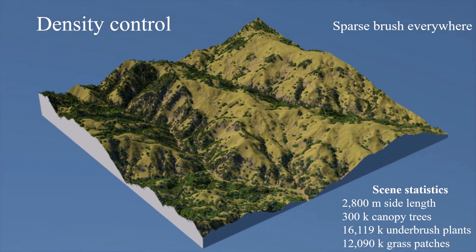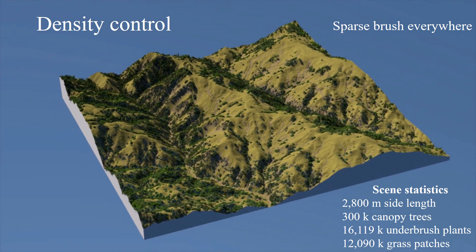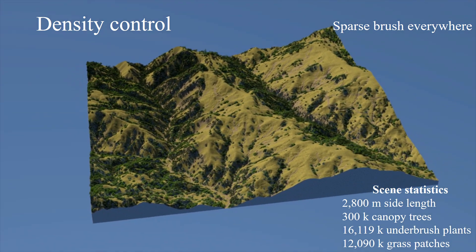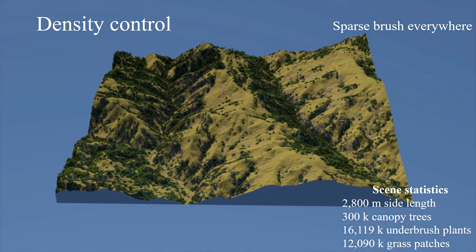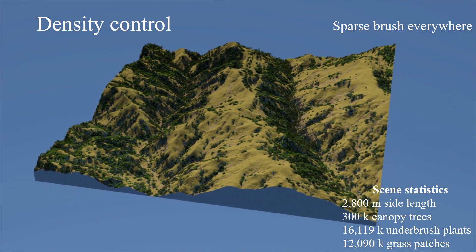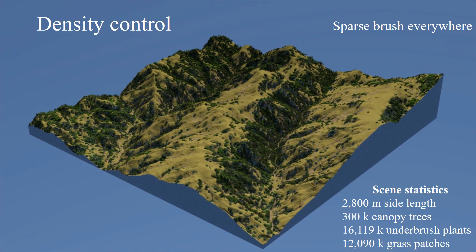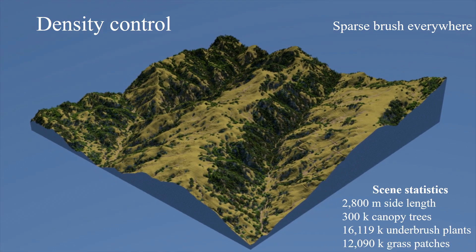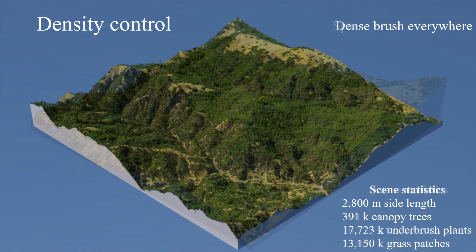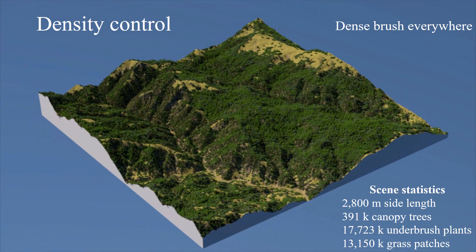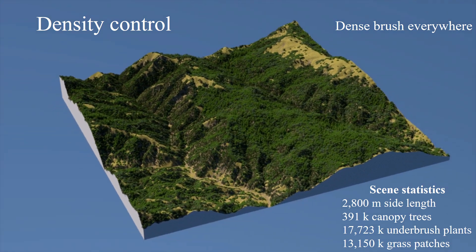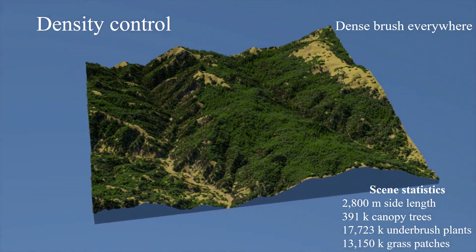Here are the results of density control with a 3 km scene. The entire scene is set as sparse and the vegetation adapts to its environment, slope and elevation. The result using a dense setting for the entire scene is also shown.